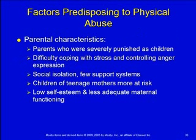There are predisposing factors for physical abuse, though these are not absolutes — abuse can happen in any location or socioeconomic setting. The most common predictors include parents who were severely punished themselves, as that is what they learned and repeat with their children. Parents who have difficulty coping with stress and have poor anger control may lose it and overreact, hurting their child.